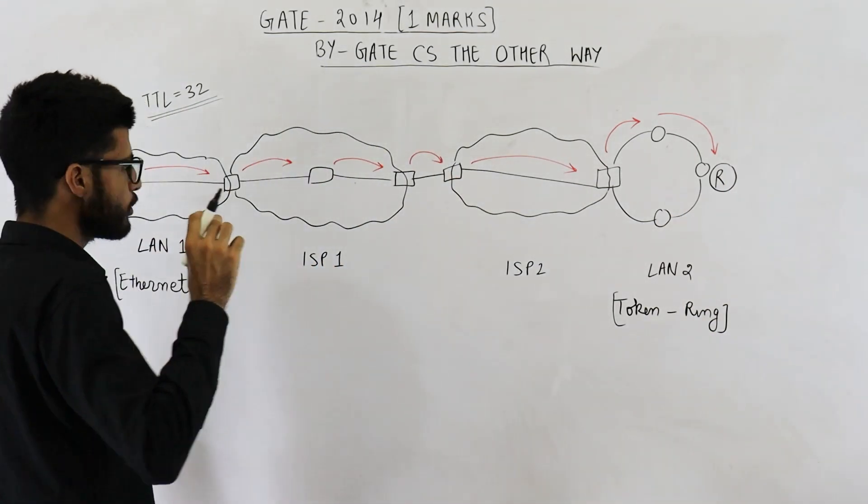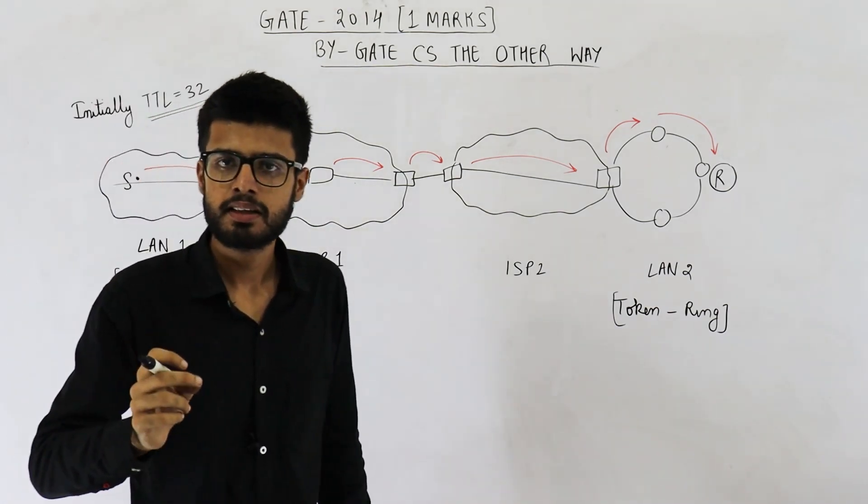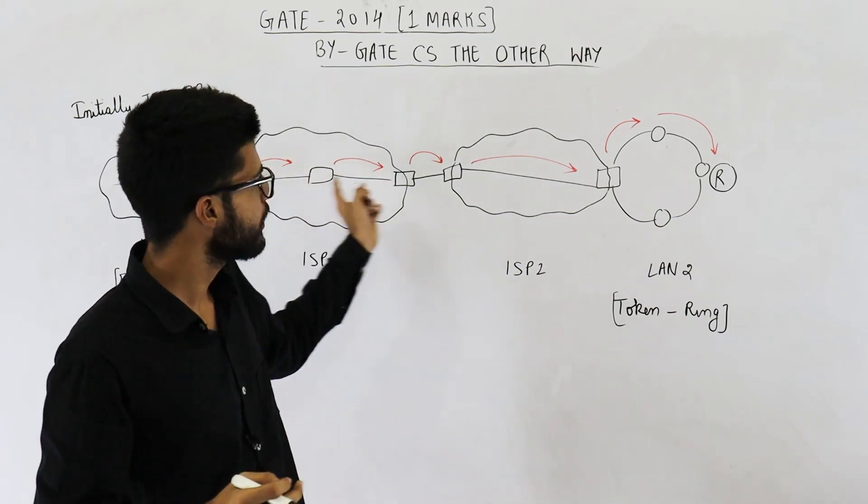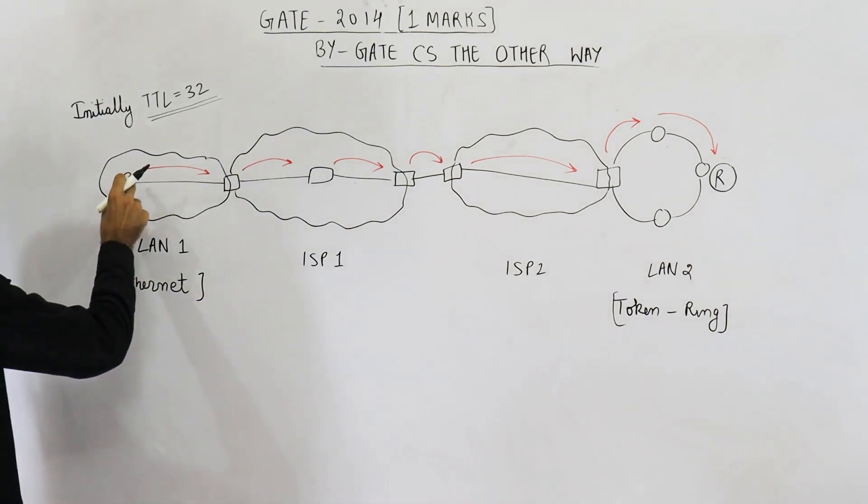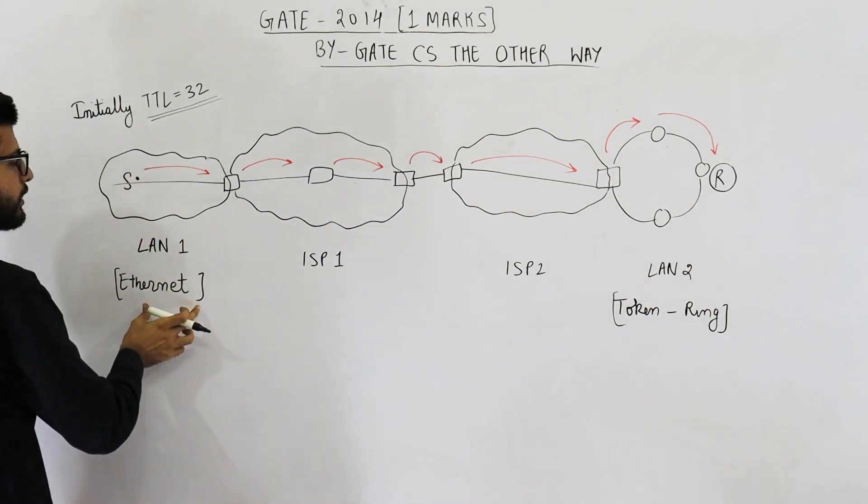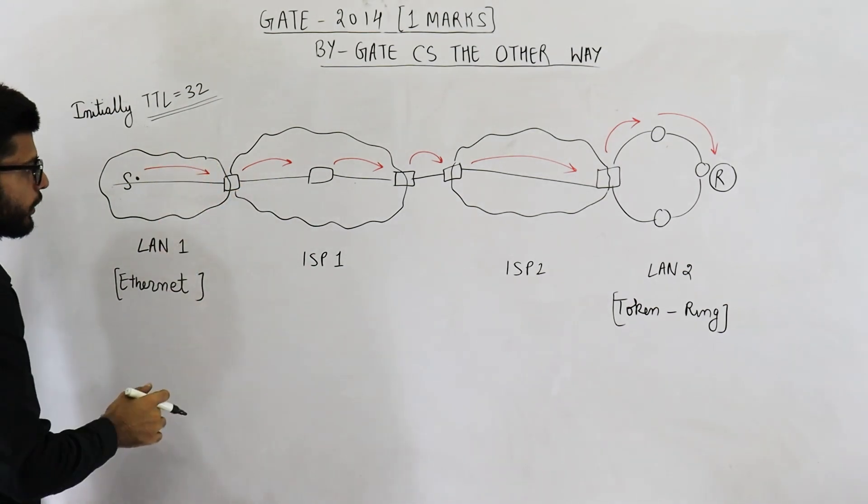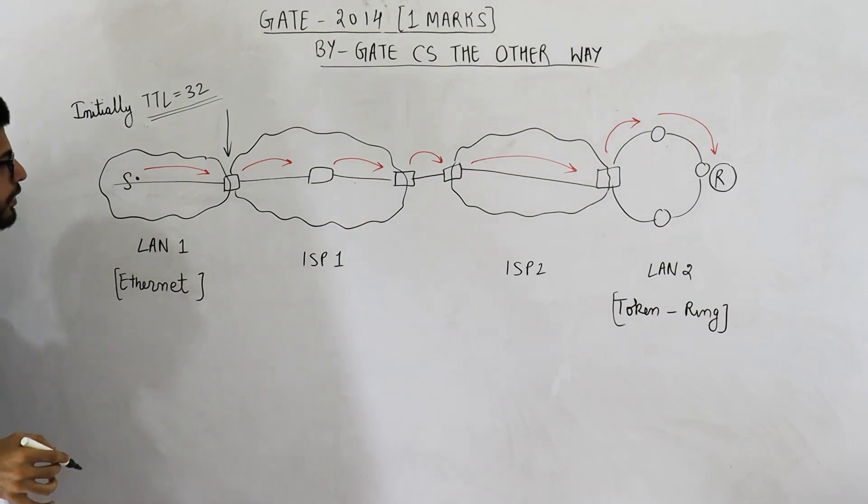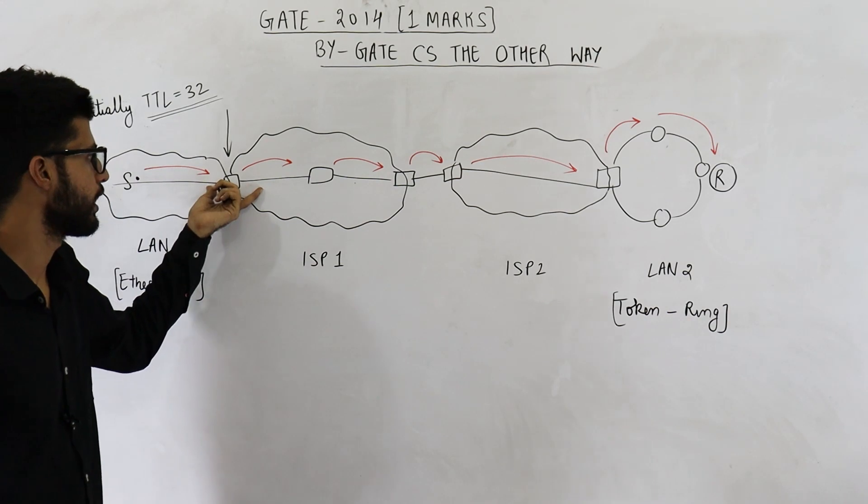See, you should know that no node present inside a LAN will decrement the TTL and every router inside the path, every router on this path will decrement the TTL. Now, because S is present in Ethernet LAN, S will directly give the packet to its default gateway, that means this router. So, this router is present on the path, hence it will decrement the value of TTL.